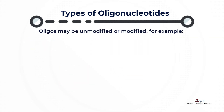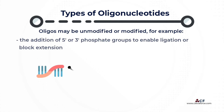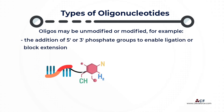Oligos may be unmodified or modified with a variety of chemistries depending on their intended use. For example, the addition of 5' or 3' phosphate groups to enable ligation or block extension.